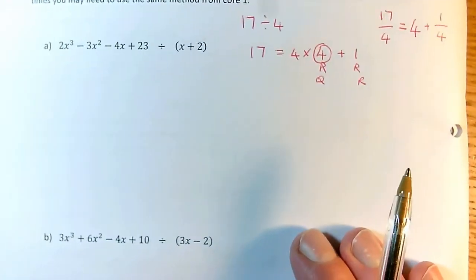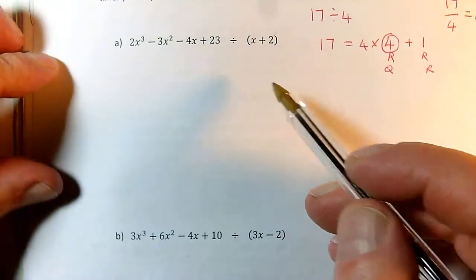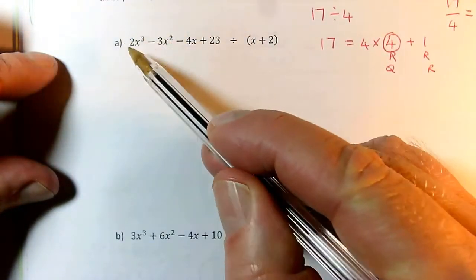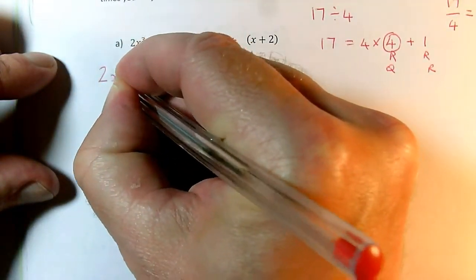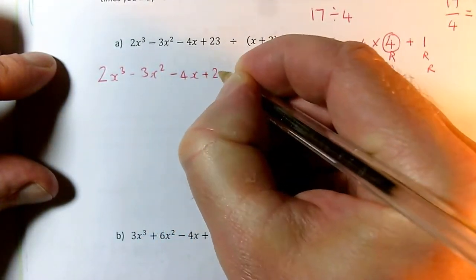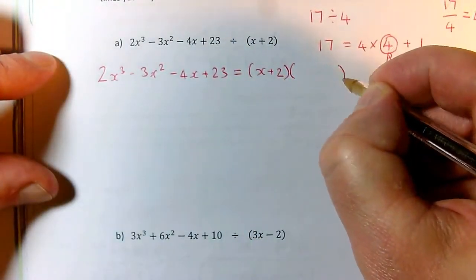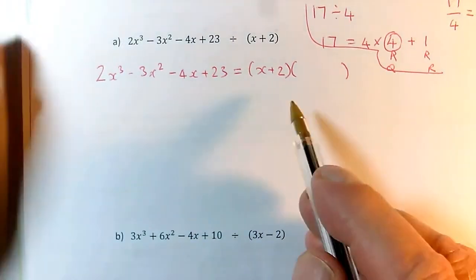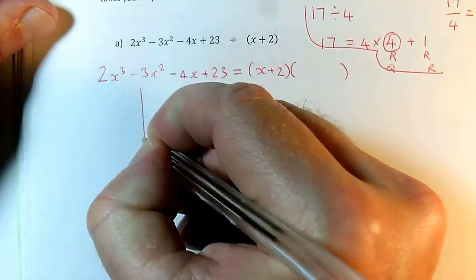So we can give exactly the two same formats of answer when we come to do this algebraically. So what are we trying to achieve? Well, this is like my 17, and this is like the 4 I was dividing by. I need to express this answer as the bracket x plus 2 times something. So what I'm aiming to get is 2x³ - 3x² - 4x + 23 expressed in the form x plus 2 times a big bracket. And then at the end of that I'm going to need plus or minus a remainder. So we've got to figure out what's going to go in this big bracket.